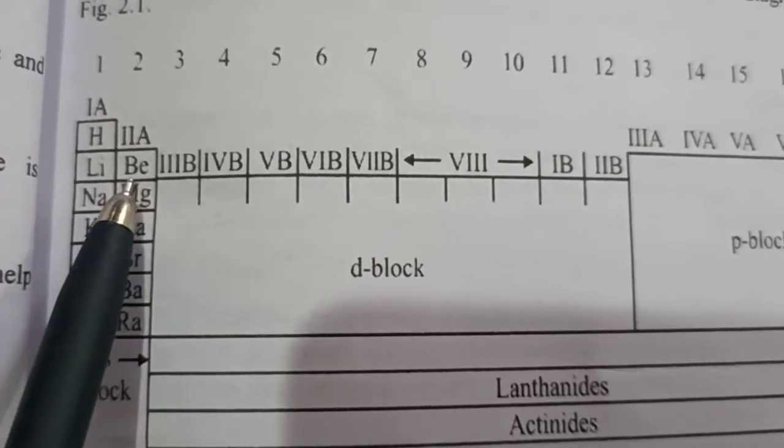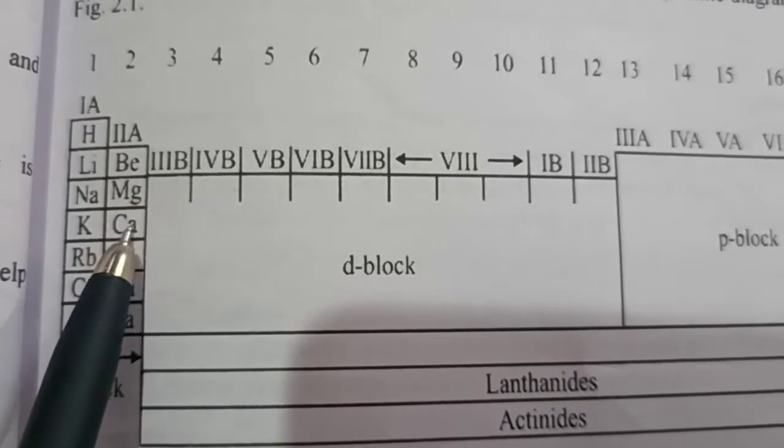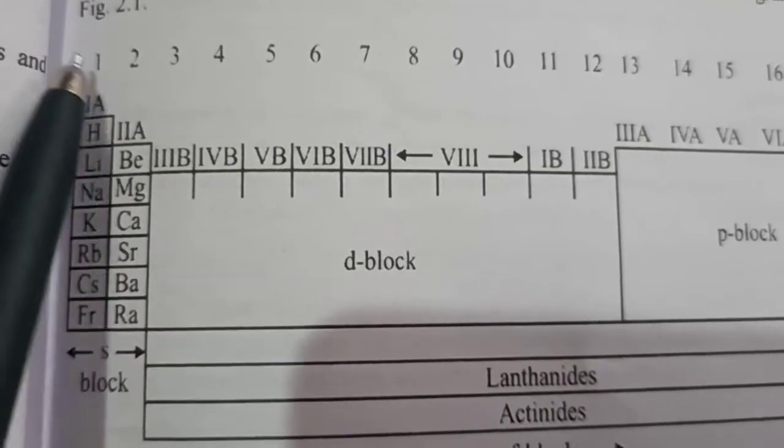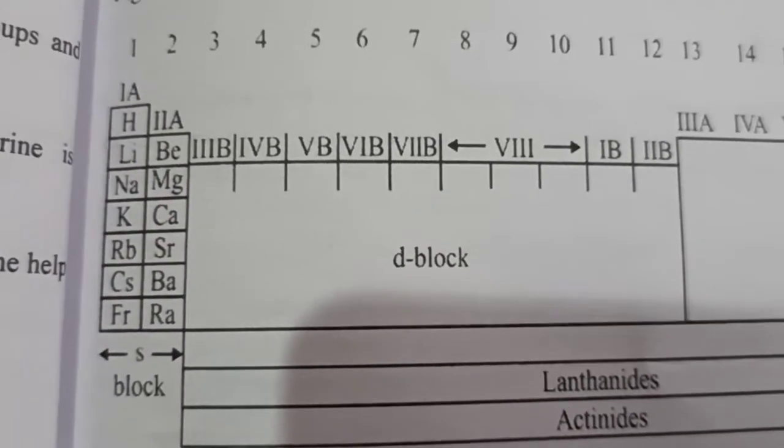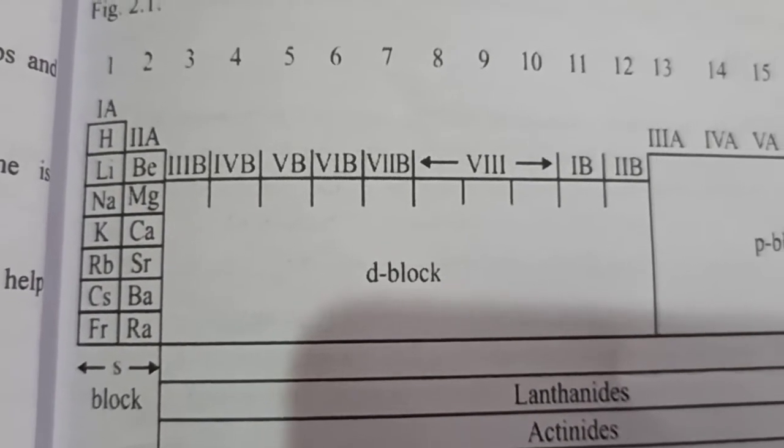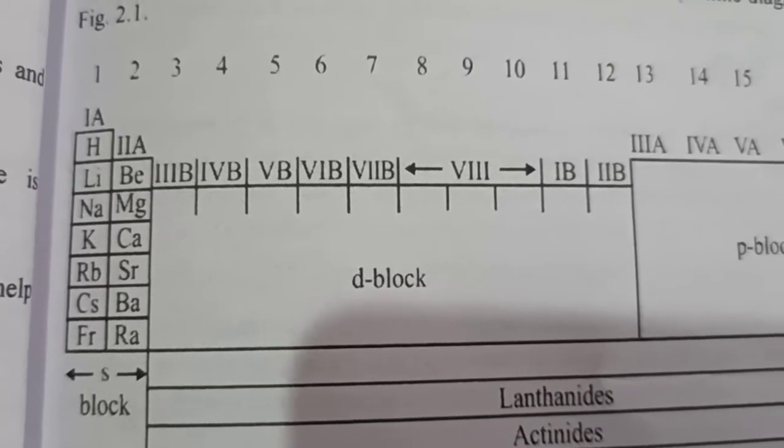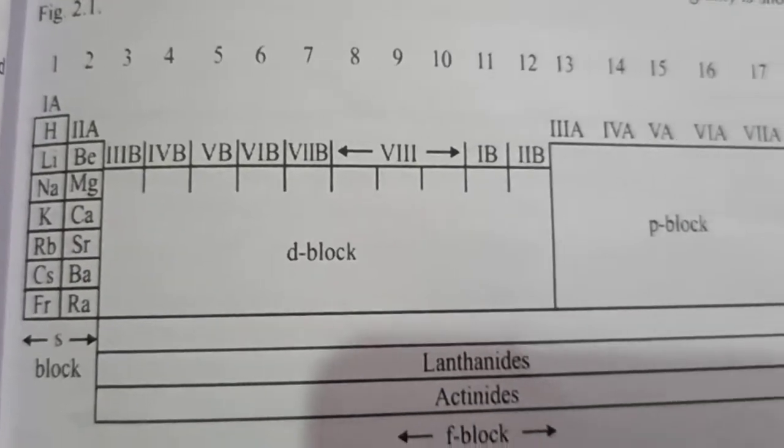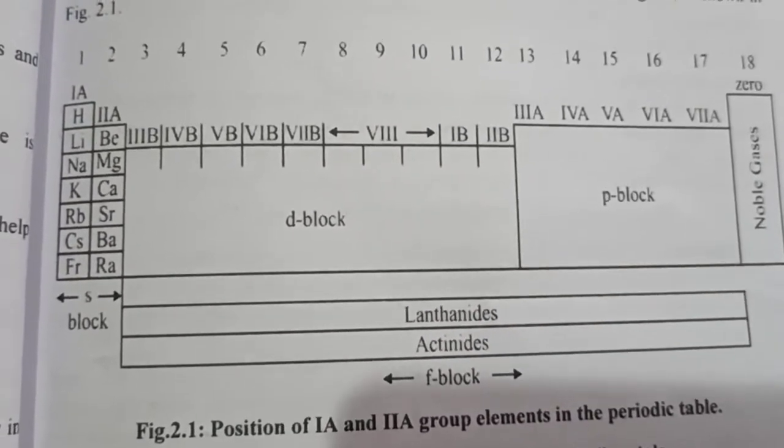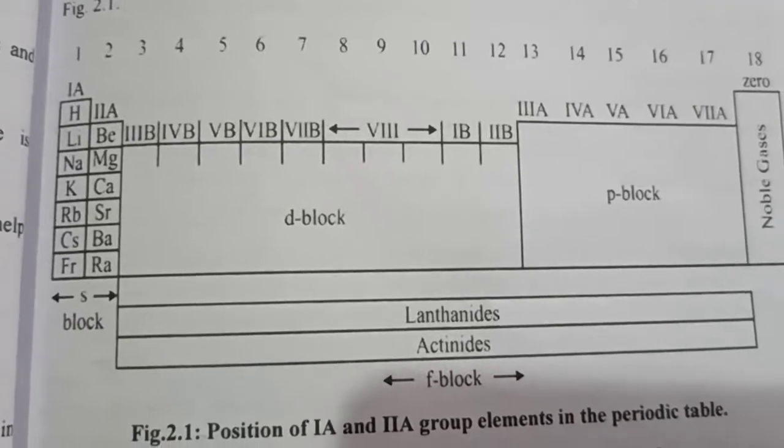Group number 2 is Be, Mg, Ca, Sr, Ba, and Ra. So group number 1 and group number 2 constitute a block which is called S-block. These are called the S-block elements and they are present on the extreme left side of the periodic table.